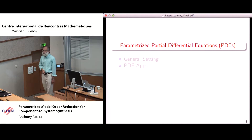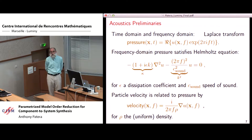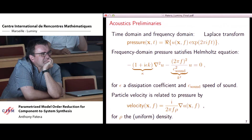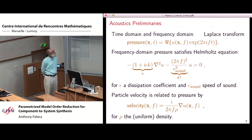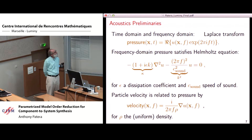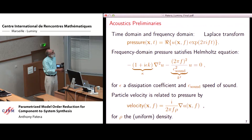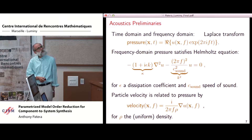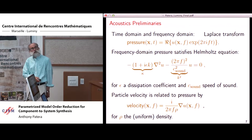First, parametrized partial differential equations. I'll describe a general setting, but let me start with some specifics. In acoustics, the pressure is a function of space and time given by the real part of the product of the frequency domain pressure U and a complex exponential, where F is frequency in hertz. The frequency domain pressure satisfies the well-known Helmholtz equation: there is an undissipative term, a slight dissipation term, together forming kappa which is essentially close to 1, and a term representing the time harmonic behavior — the wave number squared — which is essentially a non-dimensional frequency. One over 2π over k is the wavelength.